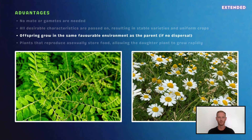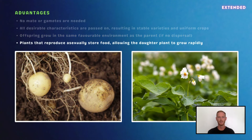When plants reproduce asexually, they grow in dense colonies, as there's no mechanism for dispersal. This may be an advantage for a species in the wild, as it leaves little room for competitors. In addition, many plants that reproduce asexually, like the potato plant, store large quantities of food. This allows the plant to grow rapidly, flower, and produce seeds before it needs to compete with other plants for resources.